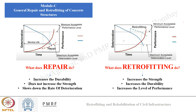Module C — the third and most important module — covered general repair and retrofitting of concrete structures. When concrete degrades, performance can be affected by insufficient strength or insufficient durability. Repair generally increases the durability of a structure to meet its initial condition without affecting strength, thereby reducing the rate of deterioration. Retrofitting increases the strength of the structure, which in turn may or may not increase durability and improves overall performance. We opt for repair when there is a durability concern, and for retrofitting when there is a strength-related concern.